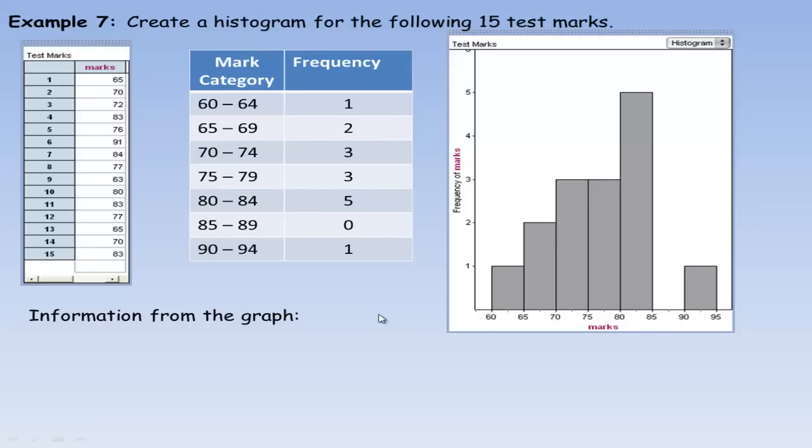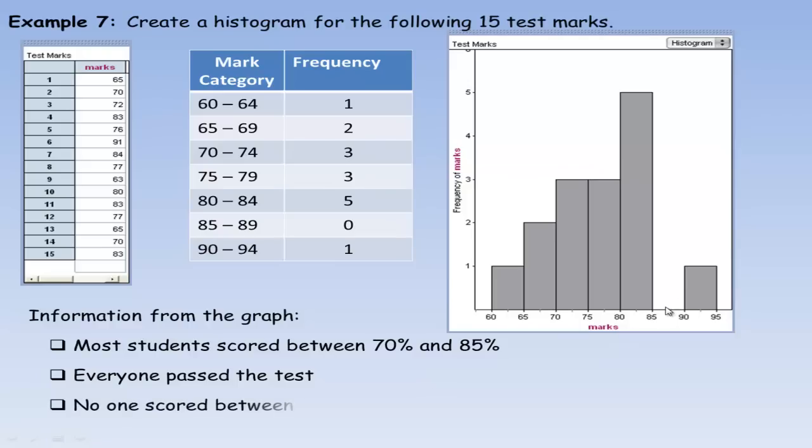Now, some information that you can read from the graph. Notice that most of the students scored between 70 and 85 (the middle three bars). A large part of the class scored in that interval. Notice that everyone passed the test. The lowest mark was in the 60s, so everyone passed if 50 is a pass. We can also see that no one scored between 85 and 89, because there's a zero for that category. That's some information you could glean from that graph. That's a few ways that you can organize data and display it, and that's the end of the lesson.